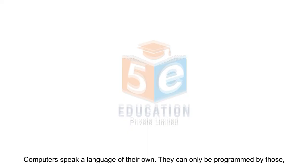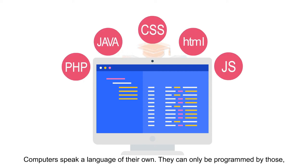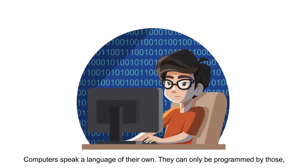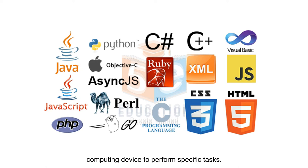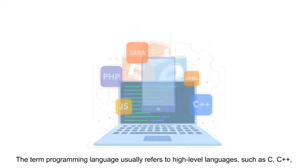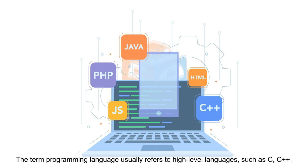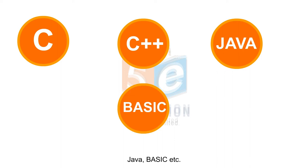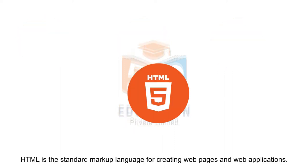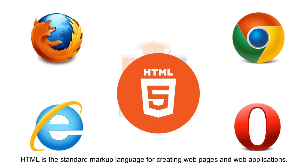Understanding HTML: Computers speak a language of their own and can only be programmed by those who know the code. A programming language is a vocabulary and set of rules for instructing a computer or computing device to perform specific tasks. The term programming language usually refers to high-level languages such as C, C++, Java, BASIC, etc. HTML is the standard markup language for creating web pages and web applications.